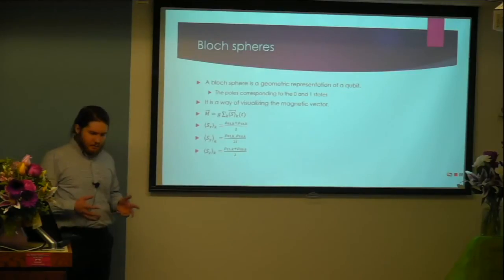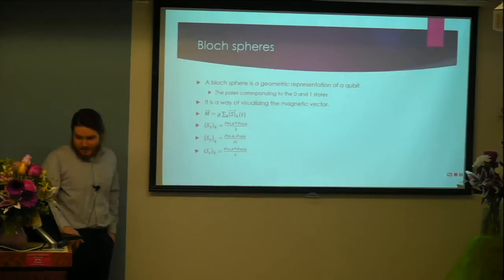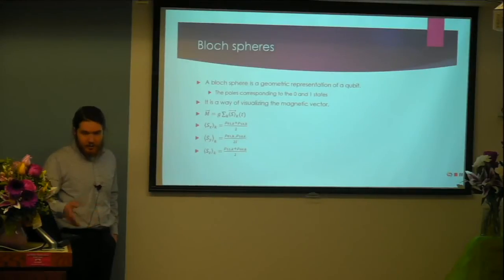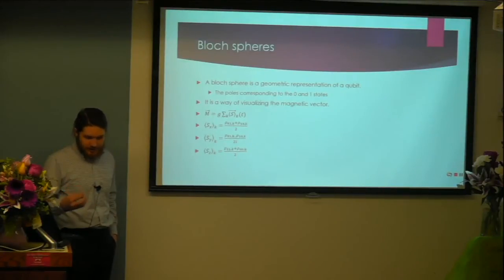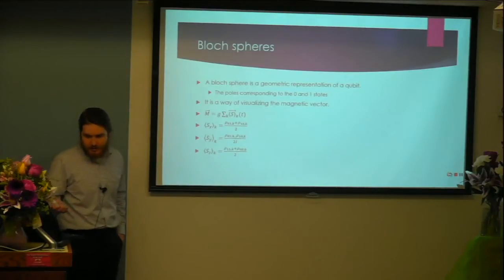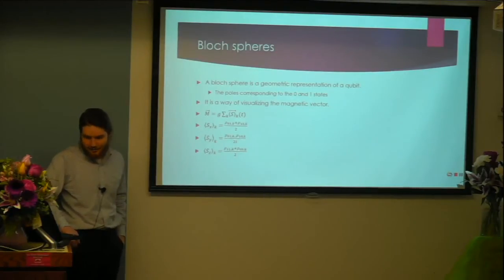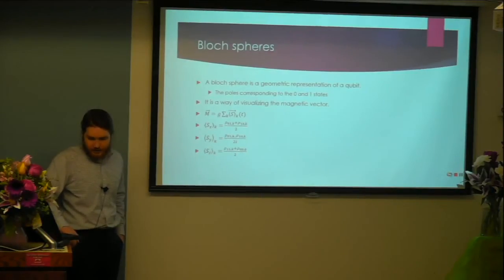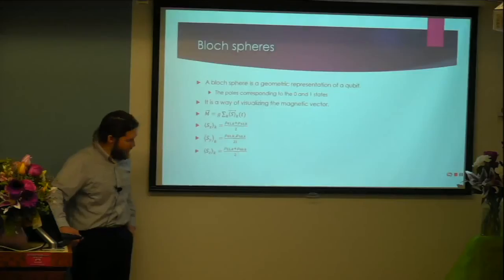This allows us to represent spin by a Bloch sphere — a geometric representation of a qubit where the poles of the sphere represent the zero and one states. More usefully, it's a way of visualizing the magnetic vector of a spinning electron as it moves through a magnetic field. Our magnetic vector is equal to g times the summation over k of s_k of time t, where s_k is the combination of the x, y, and z components of the vector, controlled by these equations.